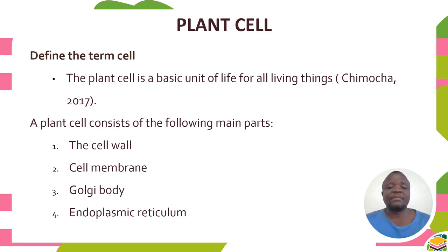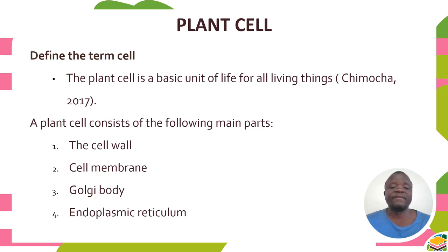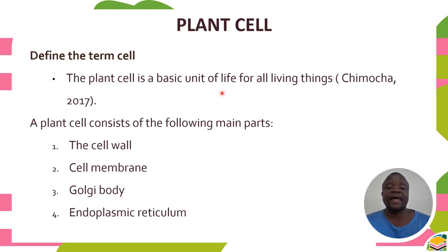Looking at the plant cell generally, we need to define what a cell is all about. Plants and animals also have their cells. A cell is a basic unit of life for all living things — something which builds the organism. Cells are building blocks for all living organisms. We can say it's a unit of life for all living organisms, including plants as well as animals.